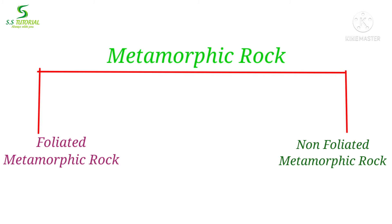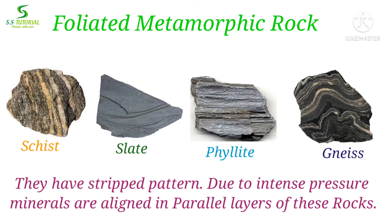Metamorphic rocks are classified mainly in two types: foliated metamorphic rocks and non-foliated metamorphic rocks. In foliated metamorphic rocks, the rock has a banded or layered pattern — that means minerals are aligned in parallel layers.